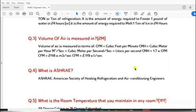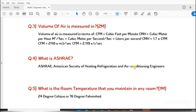Question 3: Volume of air is measured in terms of CFM equals cubic feet per minute, CMH equals cubic meter per hour, M³/sec equals cubic meter per second, L/sec equals liters per second. CMH equals 1.7 times CFM. CFM equals 2.118 times M³/sec. CFM equals 2.119 times L/sec.